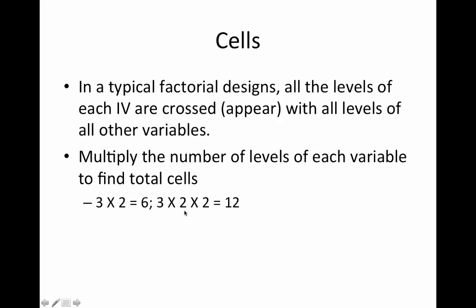Every time you add a new independent variable in one of these factorial designs, you're going to really increase the number of treatment combinations. That means more cells, and that means more people. So we're going to run out of time and energy pretty quickly after two or three independent variables.